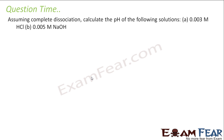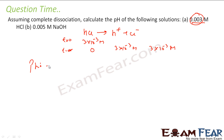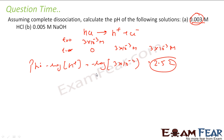Next example: assuming complete dissociation, find the pH of 0.03 M HCl. HCl completely dissociates into H⁺ and Cl⁻. At T = 0, HCl = 3 × 10⁻² M. After complete dissociation this becomes 0, and I get 3 × 10⁻² M H⁺ ions and 3 × 10⁻² M Cl⁻ ions. So pH = −log[H⁺] = −log(3 × 10⁻²) ≈ 2.5.